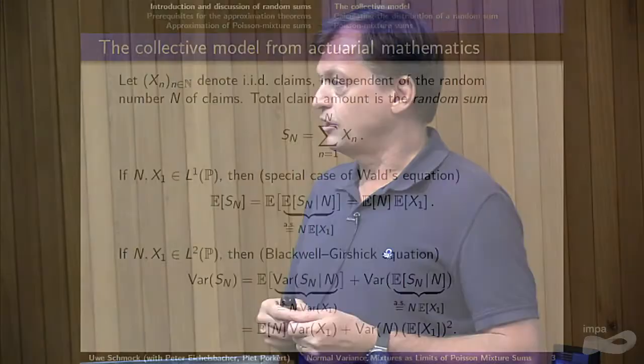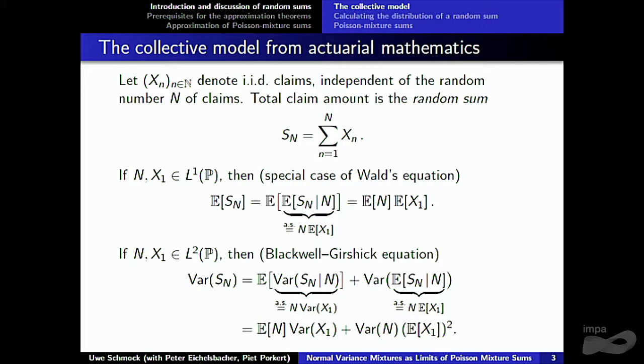What kind of models should you use for price changes? Very popular is the Black-Scholes setting, where you have Brownian motion with drift — basically you use a normal distribution. Here I want to advocate for more general distributions, namely so-called normal variance mixture distributions, which I will define later on.